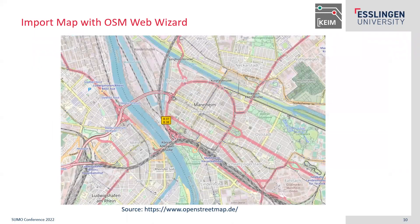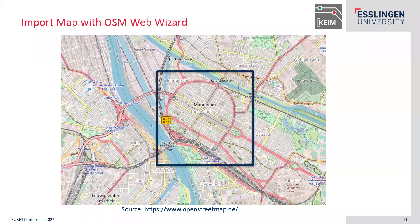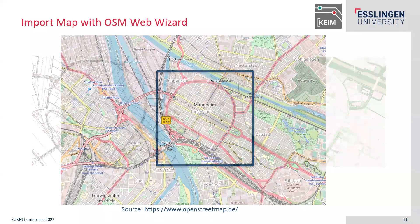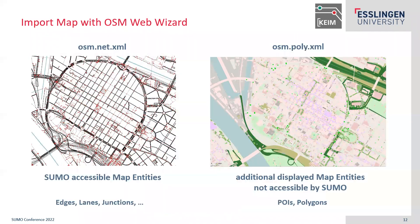For our test environment we took the city of Mannheim, extracting this area for our simulation and getting all the mentioned files. The OSM net file contains all SUMO-accessible map entities like edges, lanes, junctions, and many more. Then we have the OSM poly file, which as the name says contains polygons but also points of interest. These entities are displayed by the SUMO GUI, but unfortunately they are not accessible by SUMO — and that is where our toolchain comes in.